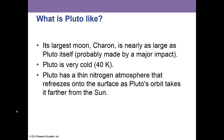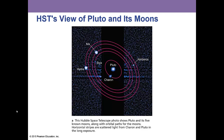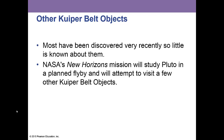What is Pluto like? Its largest moon, Charon, is nearly as large as Pluto itself, probably made by a major impact. Pluto is very cold and has a thin nitrogen atmosphere that refreezes onto the surface as its orbit takes it farther from the sun. Pluto has five moons, which perhaps makes it more of a candidate to be a planet. In 2015 the IAU was set to revisit the vote on Pluto's planetary status, and the New Horizons spacecraft would be visiting Pluto that year.